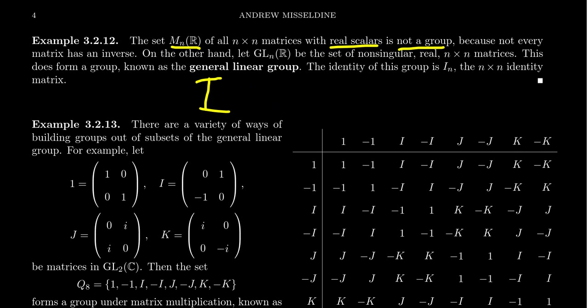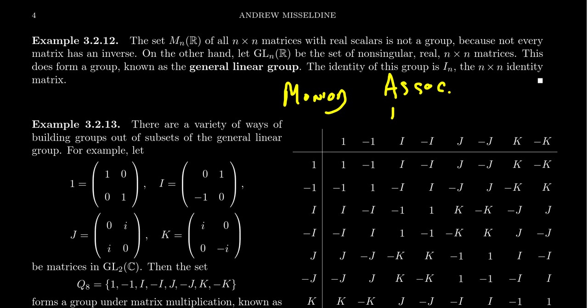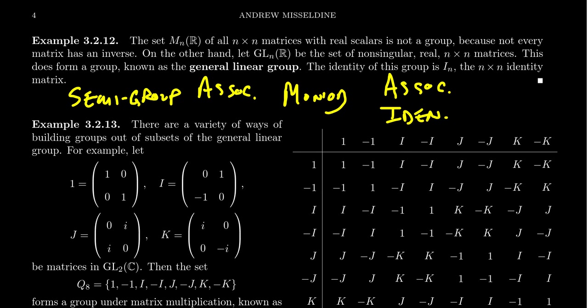Matrix multiplication is associative. It has an identity, which we would typically call the identity matrix — the matrix where you have ones along the diagonal and zeros everywhere else — but you don't in general have inverses. So this set of matrices doesn't form a group. It actually forms something we call a semi-group, or more precisely a monoid. A semi-group is a set with a binary operation that's associative; if it has an identity, we call it a monoid. So a monoid has associativity and identity, while a semi-group has just an associative binary operation. These are some generalizations of groups.